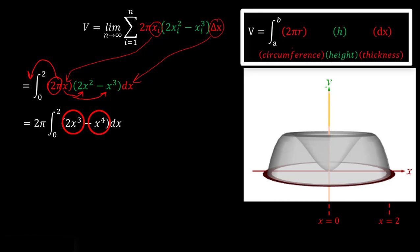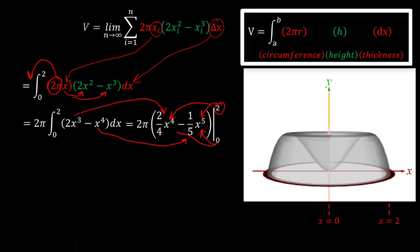And now we can just take the anti-derivative of our two terms here, which we're just using the inverse power rule here. So that 2 pi comes out front, that 2 x cubed becomes 2 over 4 x to the 4th, and that x to the 4th becomes 1 5th x to the 5th. And now using the fundamental theorem of calculus part 2, we just plug in this upper limit for our x, and then subtract the value when we plug in this 0 for our x.